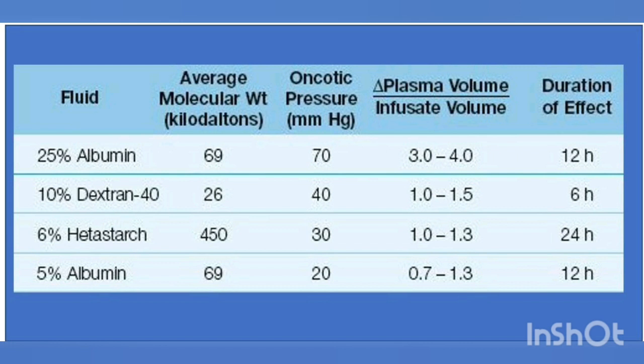The 25% albumin solution is a hyperoncotic fluid with a colloid osmotic pressure of 70 mmHg, which is more than twice that of plasma. It is given in aliquots of 50 to 100 ml, and the plasma volume increment is 3 to 4 times the infusate volume. This 3 to 4 times increase is due to fluid shift from the interstitial space, so interstitial fluid volume decreases as plasma volume increases.